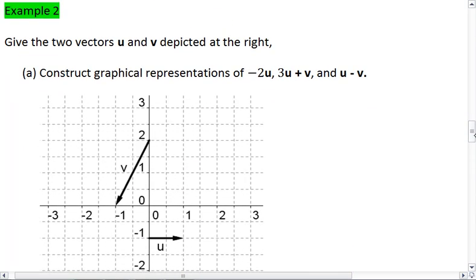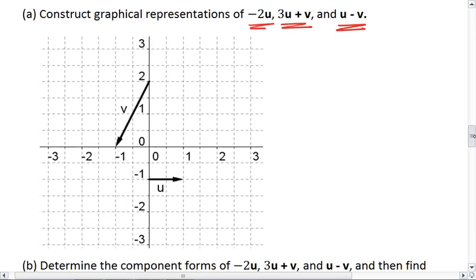Alright. This brings us to example 2. You're given two different vectors, u and v. So we have u and v. First, I want you to construct a graphical representation of negative 2u, 3u plus v, and u minus v. Try this on your own first, and then when you're ready to check your solutions, go ahead and resume the video.